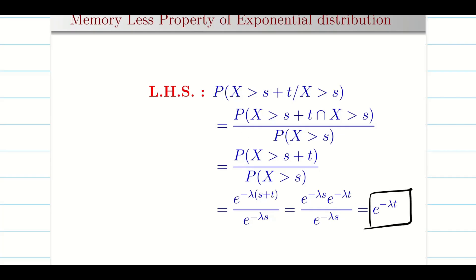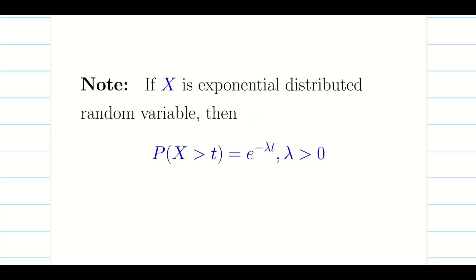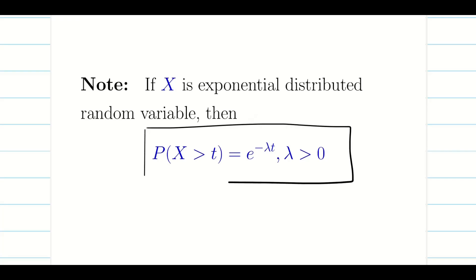Now my LHS and RHS are the same. So we have proved the memoryless property of exponential distribution. We can use this property in problem solving. In exponential distribution, whenever a problem comes, it is very easy and simple — you do not need to integrate every time. If you remember the result: probability of x greater than t equals e^(minus lambda t), provided t is a positive non-zero value. Let us keep this and the memoryless property in mind and do a problem.